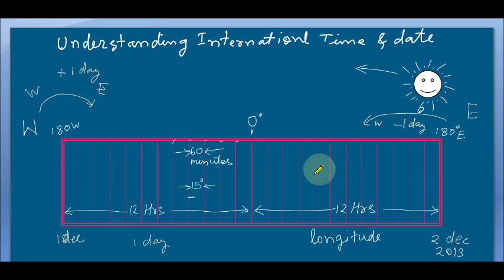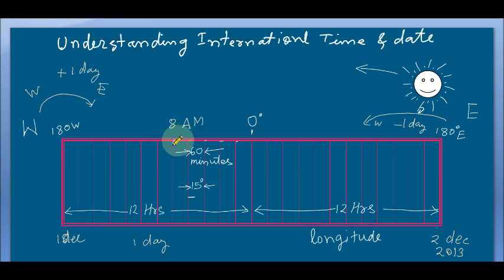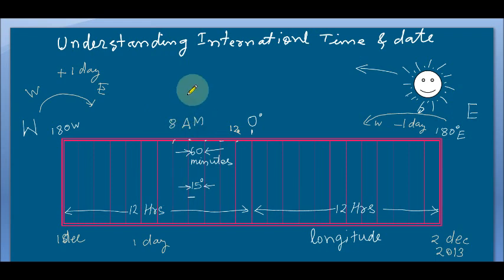The reason he reduces is because there is a 24-hour difference. For example, suppose on this point the time is 8 AM. That means 8 AM has already happened before these longitudes. So if I want to know the time at the next longitude going east, it will be 9 AM, 10 AM, 11 AM — and here it will be 12 noon. That is because the Sun came here first, then moved further east.